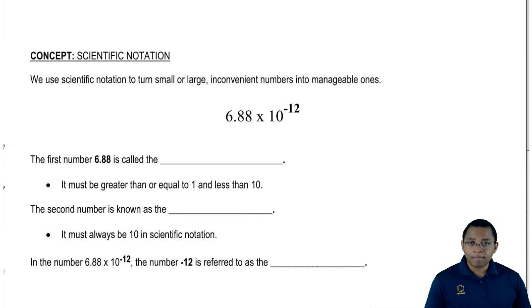We're going to say the first number, 6.88, is called the coefficient. The thing about the coefficient is the coefficient must be greater than or equal to 1 but less than 10. That's the range that we're dealing with.